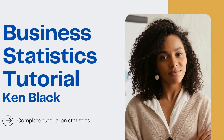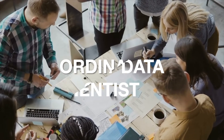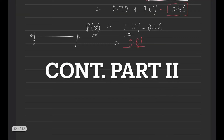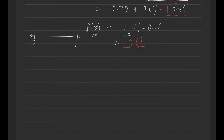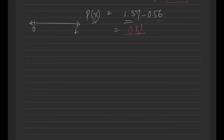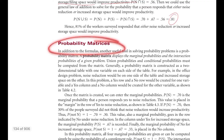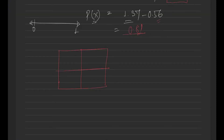Hello everyone, welcome back to my channel Ordinary Data Scientist, where we talk about data science. Sometimes all the information is not given in the problem statement, and that's when you have to dig into the details and try to find which information is missing and how to put that information in the correct formula to get that probability. That's when this matrix comes into the picture — we call it the probability matrix, where we drill down the probabilities and try to capture and calculate this kind of information.